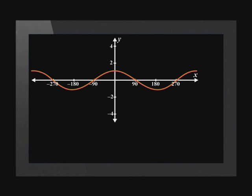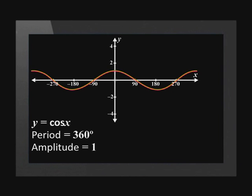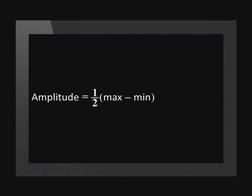When plotted, the cosine forms a wave. It has a period of 360 degrees and an amplitude of 1. Amplitude is the height of the graph from the middle point. When a graph is moved vertically, it can be difficult to see the amplitude. When this happens, we can use a calculation to find it: amplitude equals half times the maximum y value minus the minimum y value of the graph.